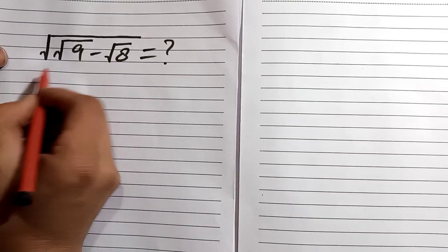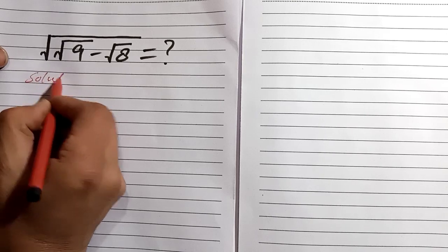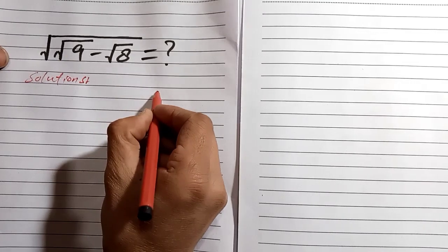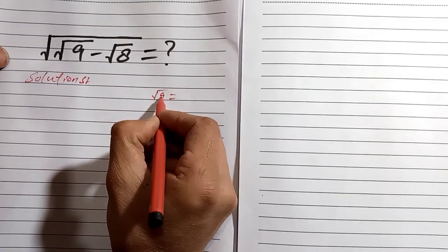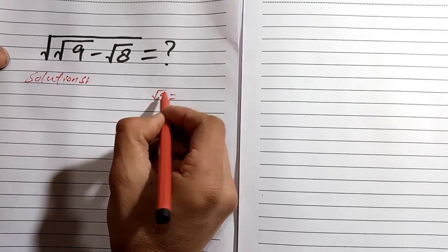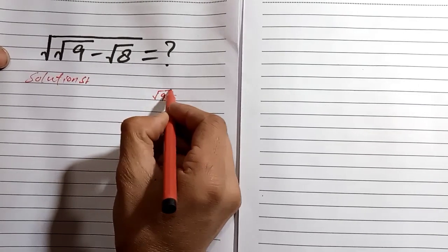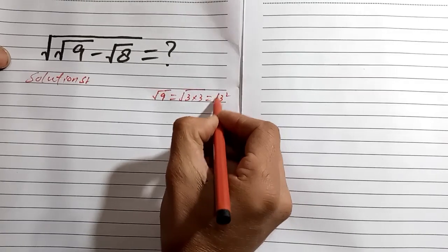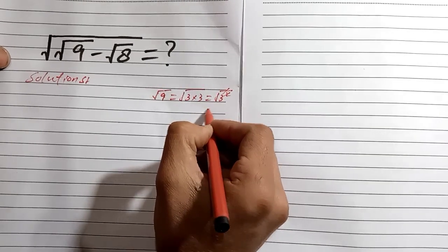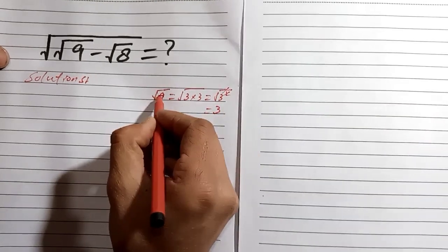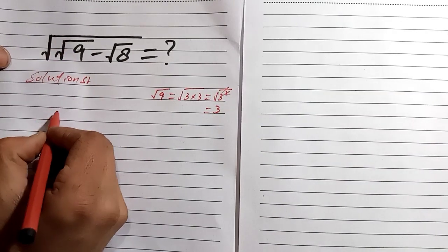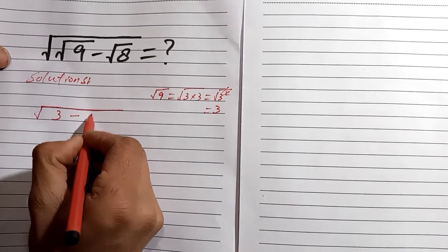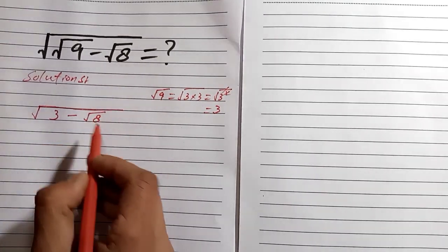We are going to the solutions. First of all, we know that root 9 — the factors of 9 are 3 multiplied by 3, which is 3 power 2. The root and the square will be cancelled, and we have left 3. So root 9 is equal to 3.